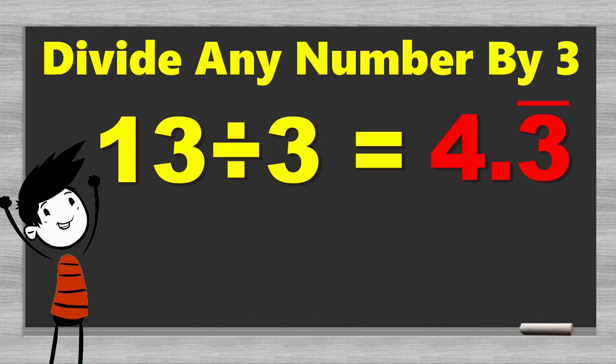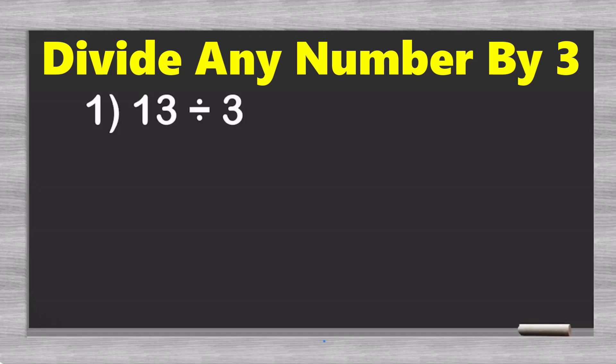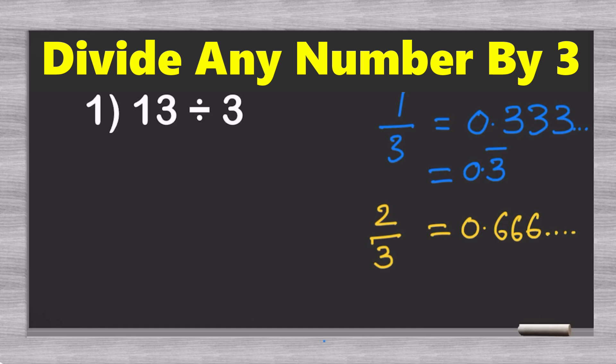And there's only one quick thing that you really need to know about this. It's that 1/3 is equal to 0.333 and so on, or 0.3 repeating. The 3 will go on forever. And likewise, if we do 2/3, that's equal to 0.666 indefinitely, or 0.6 repeating. So basically, these are the decimal expansions of 1/3 and 2/3. And those are the only things you really need to know for this trick, as we are now going to see.